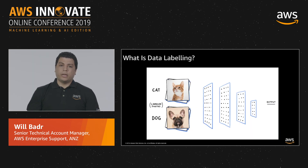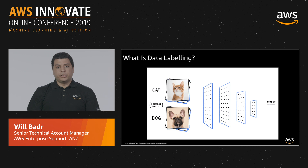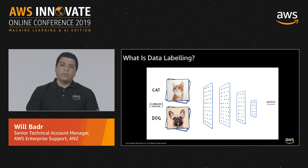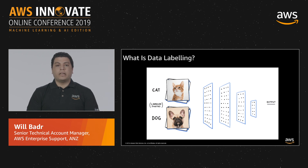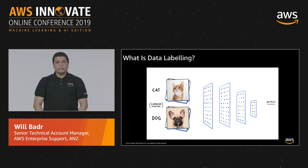Before we dive deeper into Ground Truth, let's cover some important concepts in machine learning. Machine learning problems start with data — preferably lots of data — for which you already know the target answer. We can call this target a label. In this type of machine learning, the algorithm teaches itself to learn from the labeled examples that we provide. This type of learning is referred to as supervised learning.